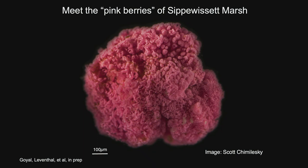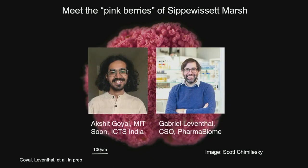To start, I want to introduce you to these beautiful little things called the pink berries of Sippewissett Marsh. Sippewissett Marsh is near Boston, in Massachusetts. These things are about a millimeter in diameter. These are microbial consortia that self-organize in these little granules. There are other cases in industry and in the environment with microbial consortia organizing in spatially structured aggregates like spheroids, and this is one of the most charismatic ones.